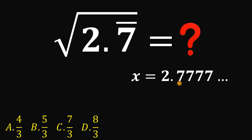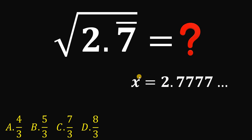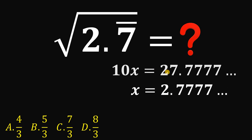Now, since only one digit is repeating, let's multiply this by 10. If we had two digits repeating, we'd multiply by 100. Since it is 1 digit, we multiply by 10. So we have 10x equals 27.7777 until infinity.